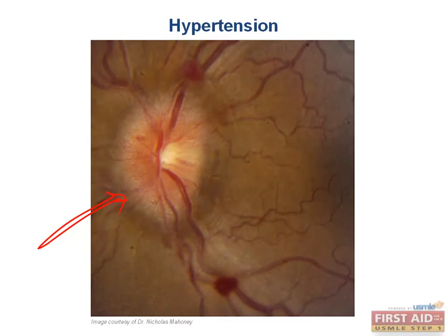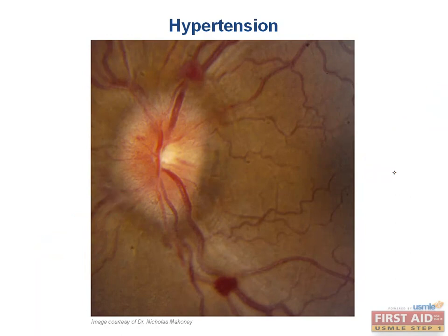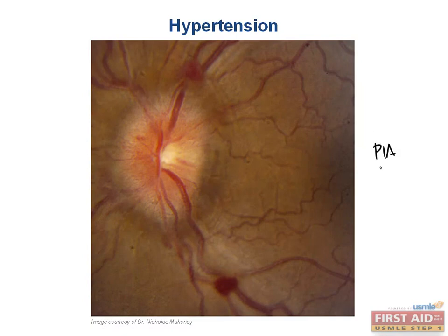The optic disc is where all the axons from the eye converge to leave the eyeball. Axons are living tissue and have anterograde and retrograde transmission of proteins and wastes. The optic nerve is covered by the optic sheath, which is composed of meninges — the pia, arachnoid, and dura. Just like the brain, this makes sense because the eyes originate as two outgrowths from the forebrain during organogenesis.